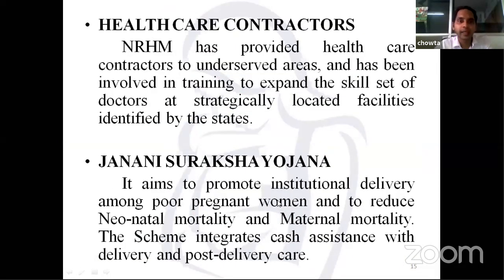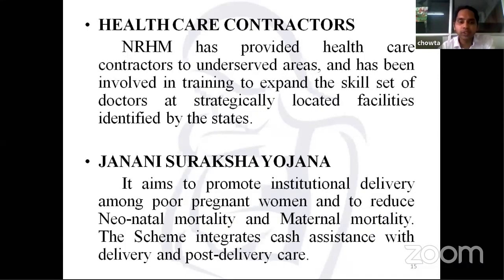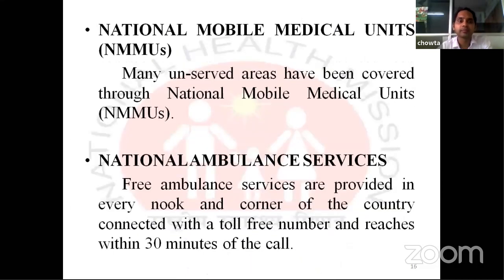Health Care Contractors: NRHM has provided health care contractors to underserved areas and has been involved in training to expand the skill set of doctors at strategically located facilities identified by states. Next is Janani Suraksha Yojana: it aims to promote institutional delivery among poor pregnant women and to reduce neonatal and maternal mortality. The scheme integrates cash assistance with delivery and post-delivery care. Next is National Mobile Medical Units: many unserved areas have been covered through these units. National Ambulance Services: free ambulance services are provided in every nook and corner of the country, connected with a toll-free number and reaching within 30 minutes of the call.